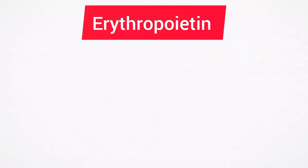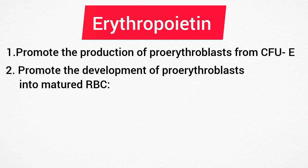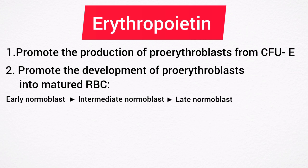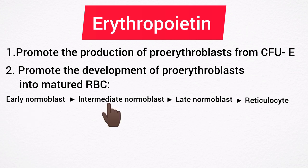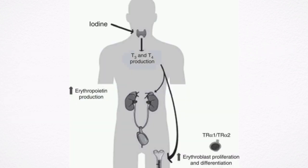Erythropoietin promotes the following processes. Number one, it promotes the production of proerythroblasts from the colony-forming unit erythrocytes of the bone marrow. Number two, it promotes the development of proerythroblasts into mature red blood cells through the early normoblast, intermediate normoblast, late normoblast, and reticulocytes. The early normoblast is known as the basophilic erythroblast, the intermediate normoblast as the polychromatophilic erythroblast, and the late normoblast as the orthochromatic erythroblast. Number three, it promotes the release of matured erythrocytes into the blood.